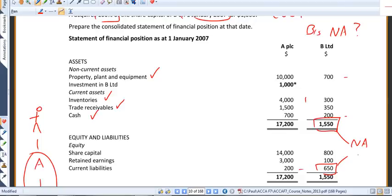900. Net assets at the 1st of January 2007 were 900.